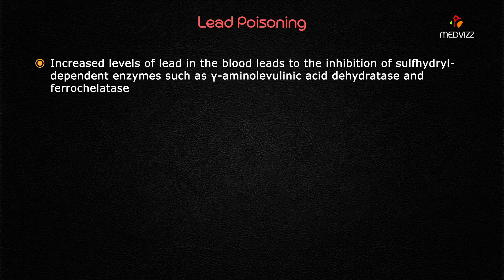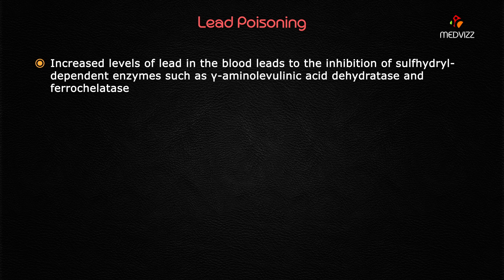Increased levels of lead in the blood lead to inhibition of the enzymes delta-aminolevulinic acid (ALA) dehydratase and ferrochelatase. This occurs because lead causes inhibition of sulfhydryl groups — remember that in ALA dehydratase and ferrochelatase, sulfhydryl groups act as active sites. So even though enzyme concentration is normal, the active site is inhibited by the increased concentration of lead. That is the biochemical defect.